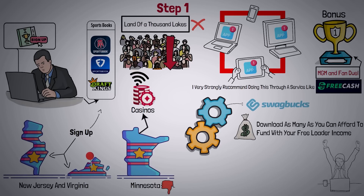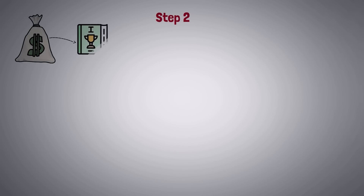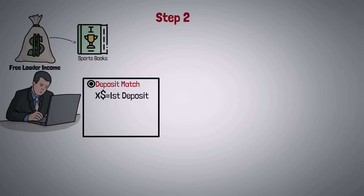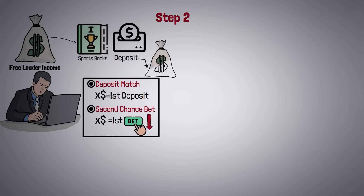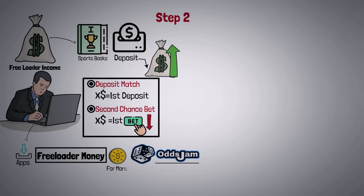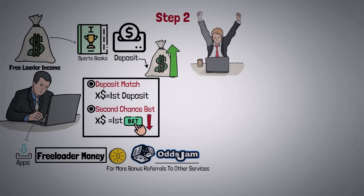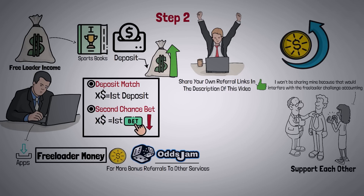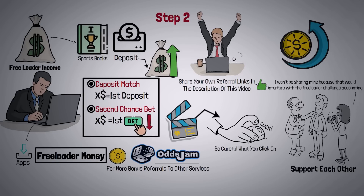You'll get a bonus reward if you use my referral to Free Cash in the description. Then for step two, we will fund these sports books with our freeloader income. Pay attention to the sign-up promotions — most will offer either a deposit match of x dollars on your first deposit, or a 'second chance' bet up to x dollars if your first bet loses. You will want to deposit up to that limit amount to maximize your returns. Once you've downloaded your apps, we can access OddsJam for more bonus referrals to other services. I invite you guys to share your own referral links in the comments so we can support each other. The goal of this step is to open as many sports books as you can afford to fund and feed off those free bets to the maximum extent.